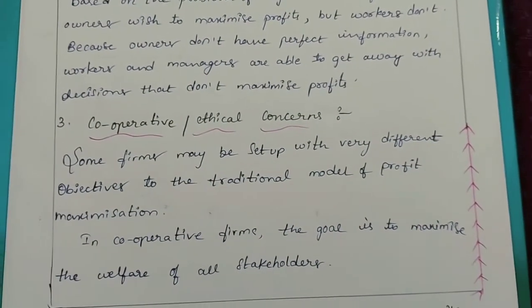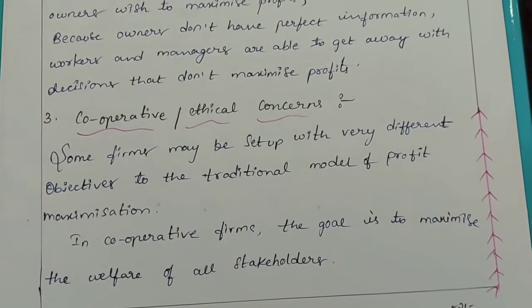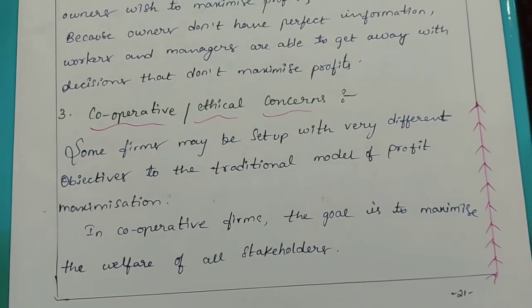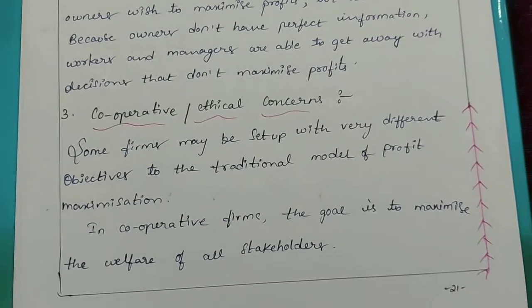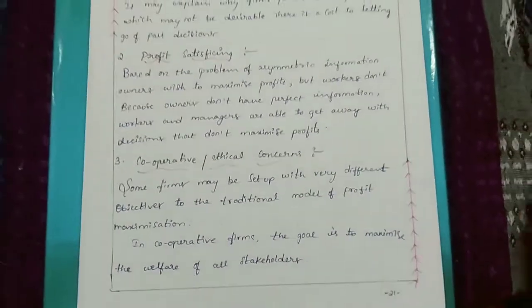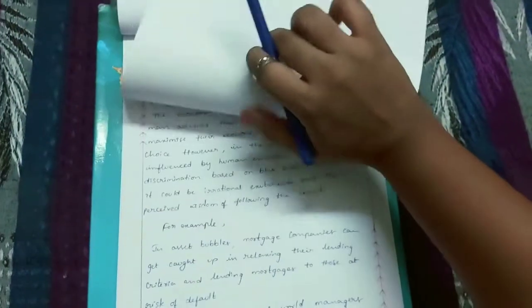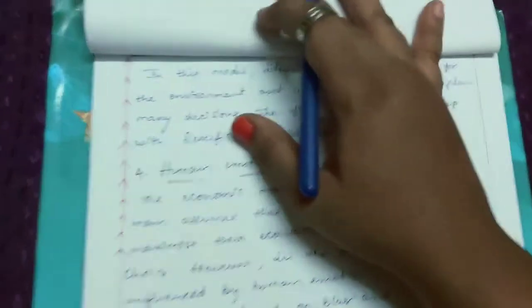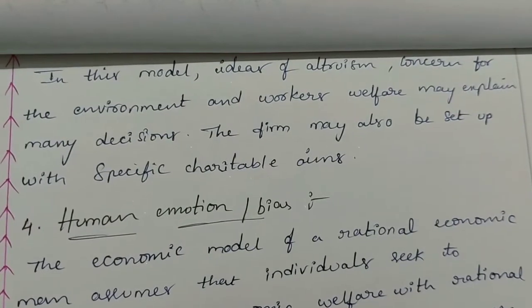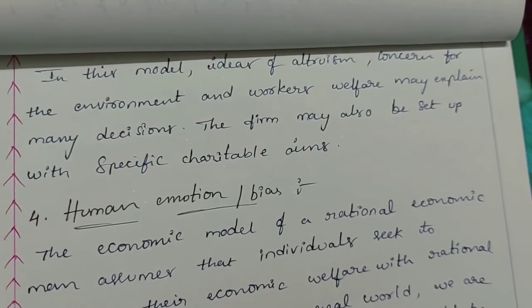Element 3: Cooperative or ethical concerns. Some firms may be set up with very different objectives to the traditional model of profit maximization. In cooperative firms, the goal is to maximize the welfare of all stakeholders. In this cooperative model, ideas of altruism, concern for the environment, and workers' welfare may explain many decisions.